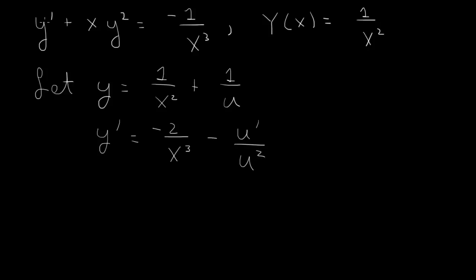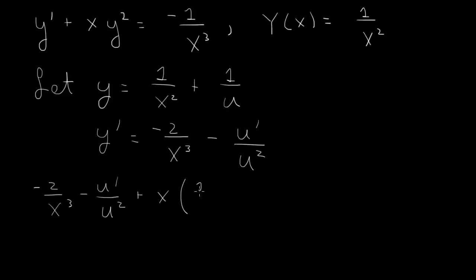So we substitute into the differential equation. We have minus 2 over x cubed minus u prime over u squared, plus x times y squared — which is (1 over x squared plus 1 over u) squared — equals the right-hand side, which is minus 1 over x cubed.